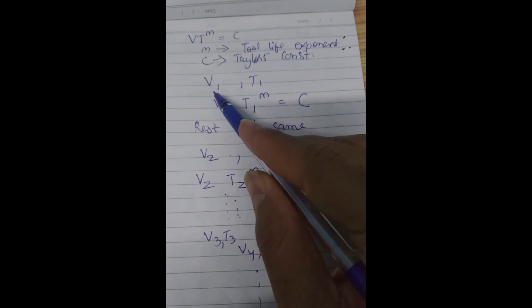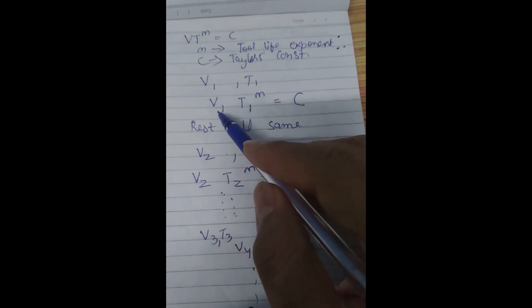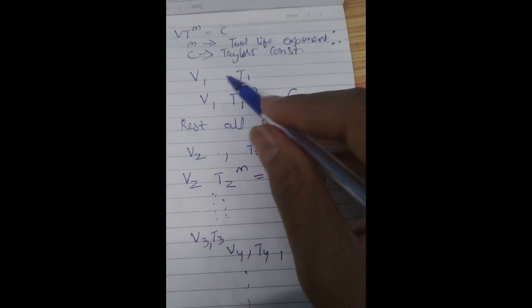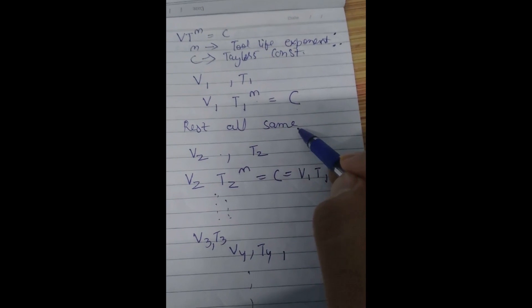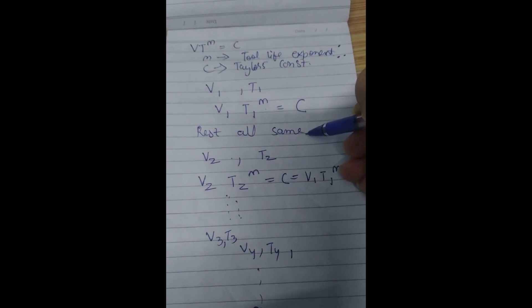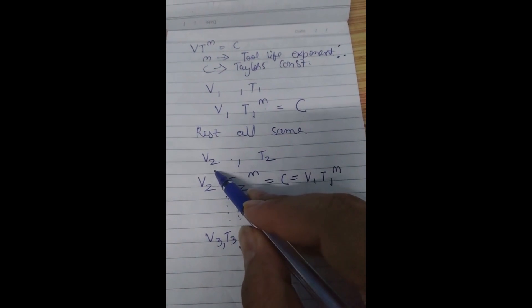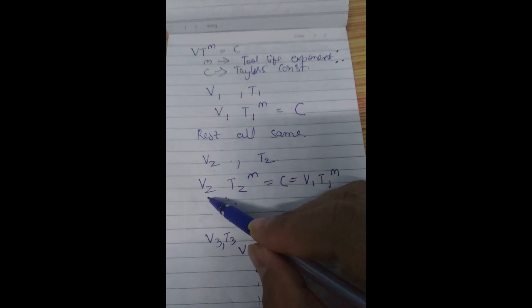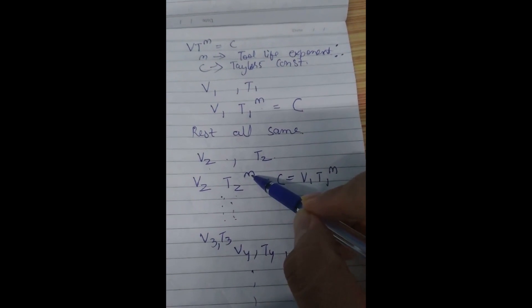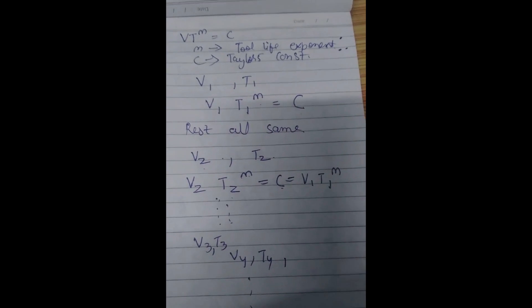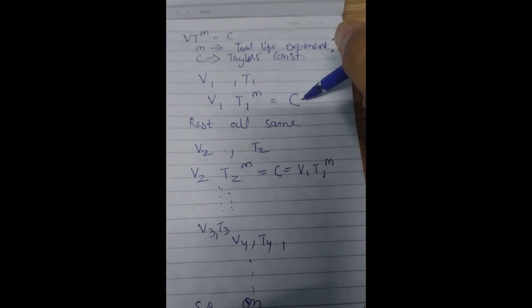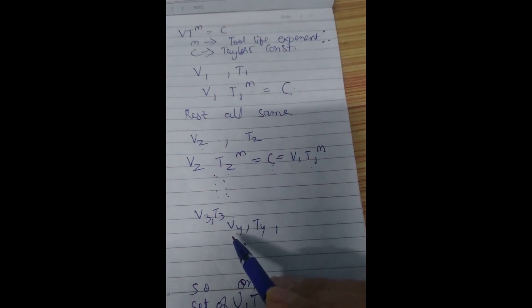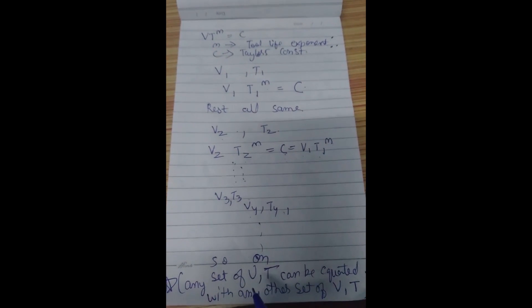So we can have a particular set of velocity v1 giving the tool life t1, and we can relate them: v1 multiplied by t1 raised to power n, n was the tool life exponent. This product value will be a constant c. Now keeping all the conditions, parameters, everything same, in the same experiment for a different value of v2, increase or decrease whatsoever, giving a different tool life t2, again we can relate the v2 and t2 by the same tool life exponent. It will give the same constant c as in the previous equation, and this will be same equal to v1 t1 to power n. Hence we can relate v3 t3, v4 t4. We can relate any set of v t and equate them with any other.